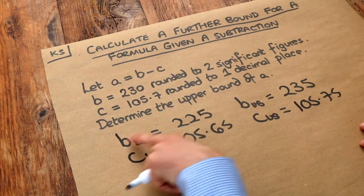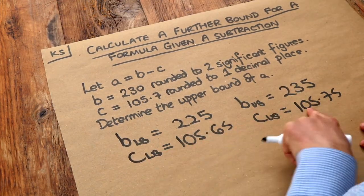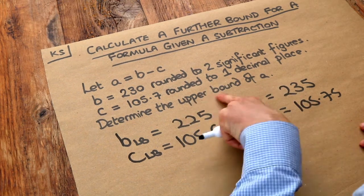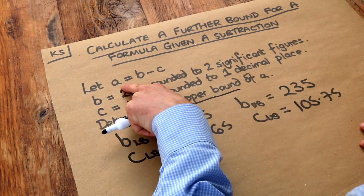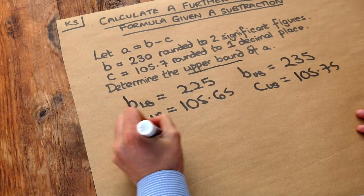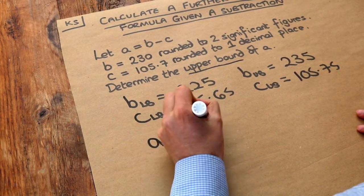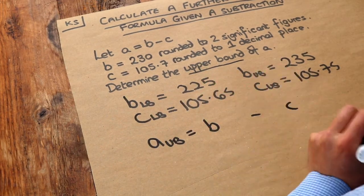So B can be anywhere between these two values, C could have been anywhere between these two values and we want to get the upper bound, the biggest possible value of A. Now if we want to get the upper bound of A what do we use for the B and what do we use for C?